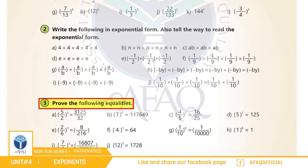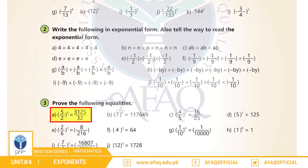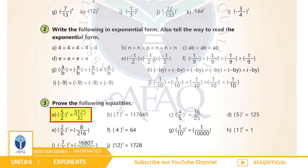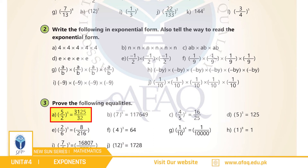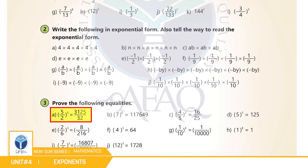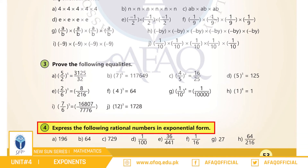Question number 3: prove the following equalities. (a) (5/2) to the power of 5 equals 3125/32۔ آپ 5 کو 5 times multiply کریں گے تو آپ کے پاس آئے گا 3125، اور 2 کو 5 times multiply کریں گے تو ہمارے پاس آئے گا 32۔ So یہ proof ہوا کہ (5/2) to the power 5 equals 3125/32۔ اسی طرح سے اگلے سوال آپ نے خود حل کرنے ہیں۔